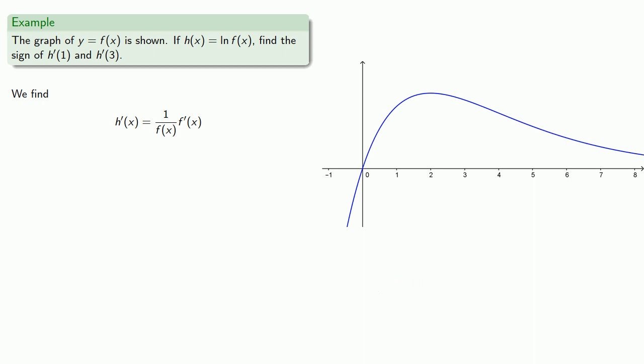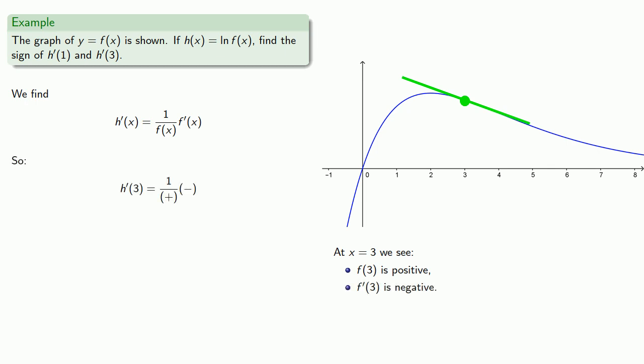Similarly, at x equals 3, we see that f of 3 is positive and f prime of 3 is negative. So h prime of 3 is 1 over a positive number times a negative number — h prime of 3 is negative.